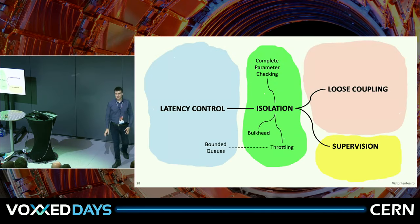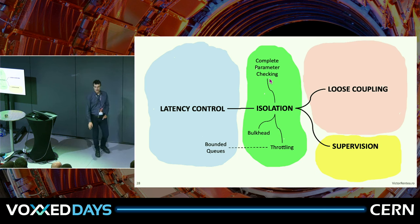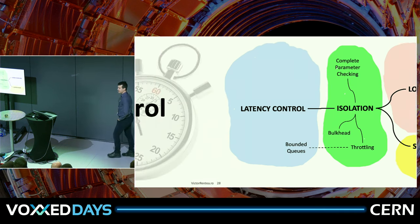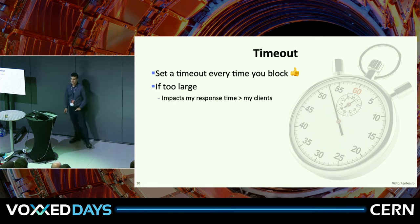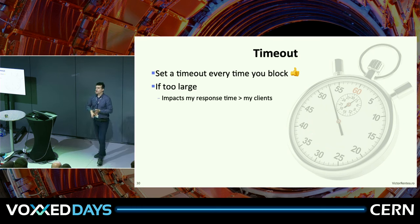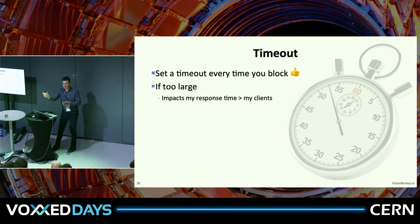Isolation patterns covered so far: parameter checking, bulkhead, throttling, and bounded queues. Now latency control. When you call a system, the first thing you should put in place is timeouts — not only when you call over network, but any time you block, whether it's a reactive sync, a future.get, or anything else. Any time you block, you need to have a timeout set.